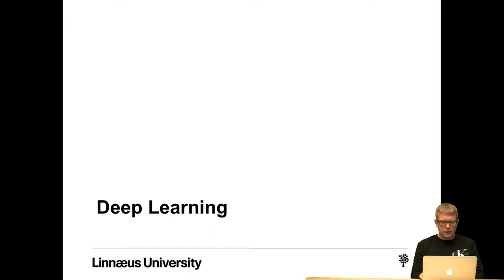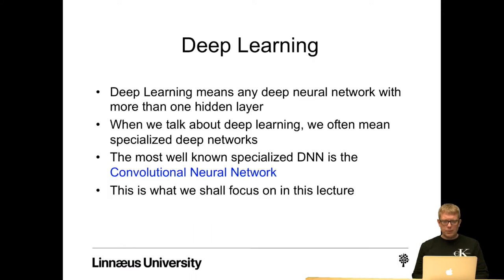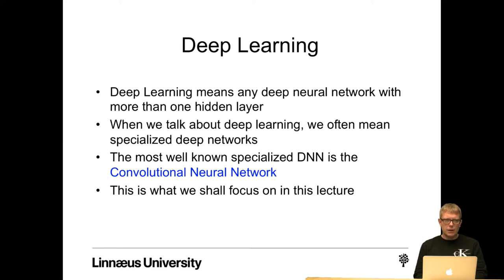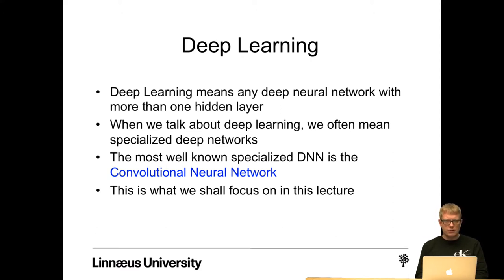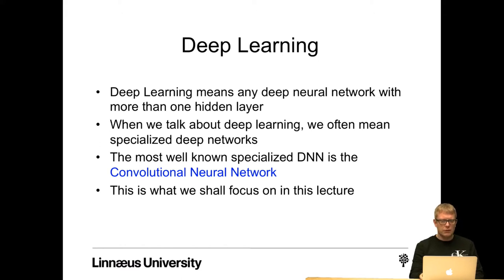What is deep learning? Deep learning means any deep neural network with more than one hidden layer. But when we talk about deep learning, we often mean specialized deep networks for certain tasks. And the most well-known specialized deep neural network is the convolutional neural network for image classification. And this is what we shall focus on in this lecture.